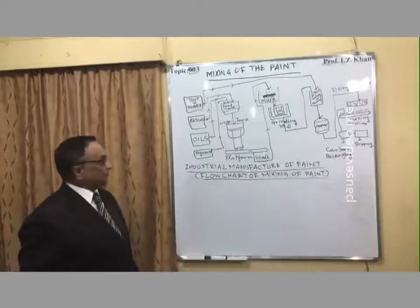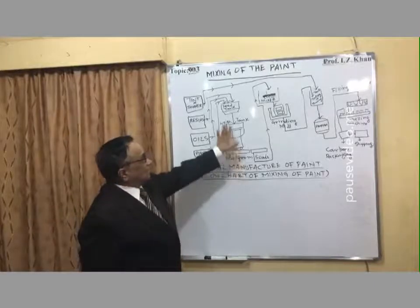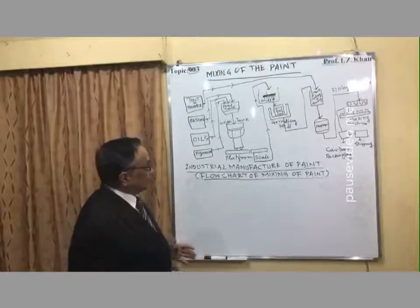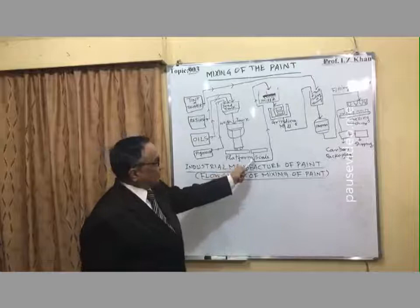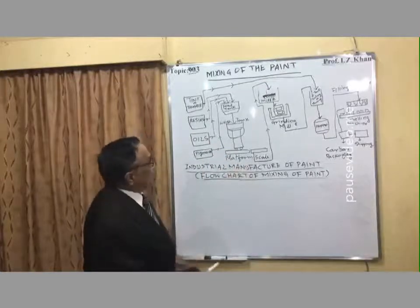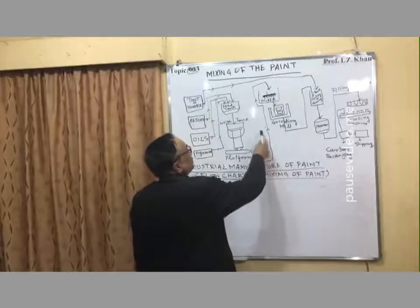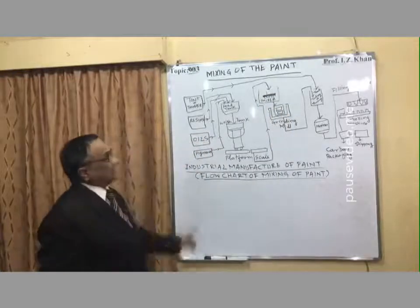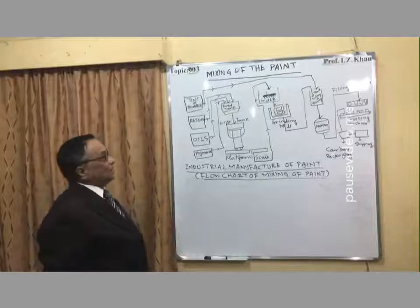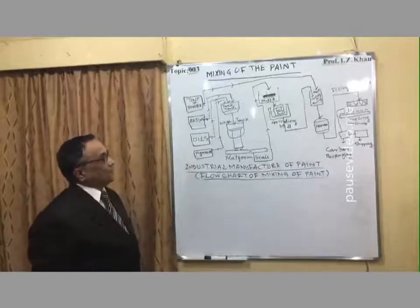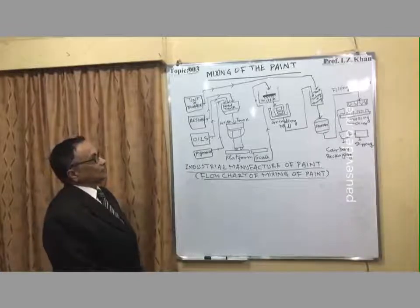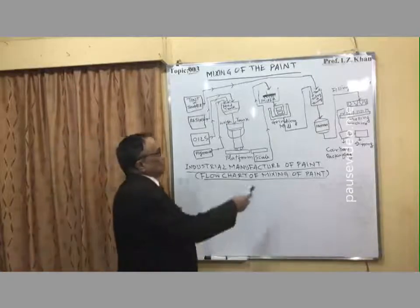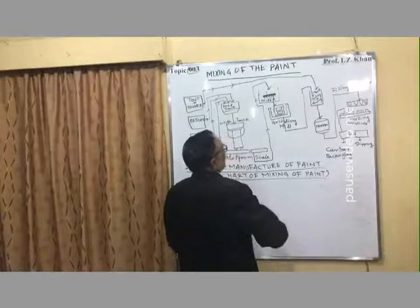That platform will give the weight of the whole mixture because everything has to be calculated. After scaling, it will come here and after taking the weight, the whole mixture — that is, the base material — will be transferred into another big container called the mixer. In that mixer, as I have already told you, there are sigma-type blades, which are very effective and will rotate to thoroughly mix the material. After mixing, it will come to the grinding mill.